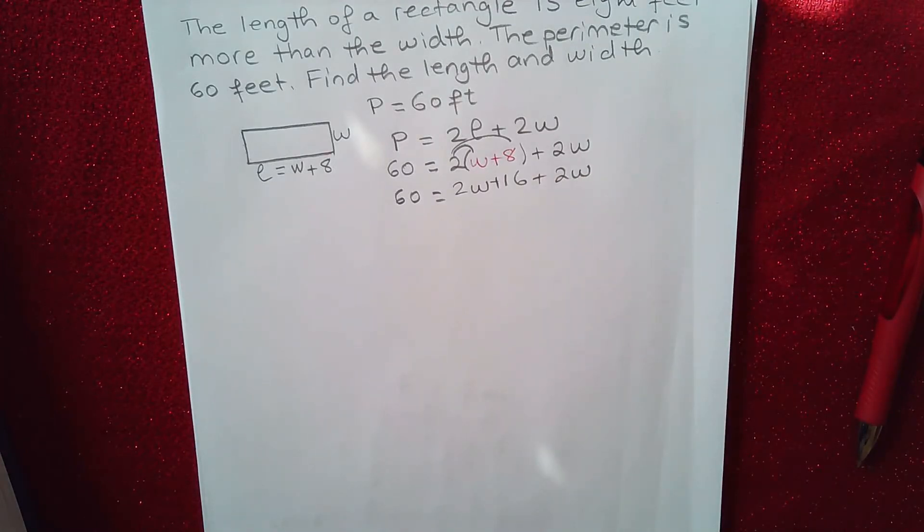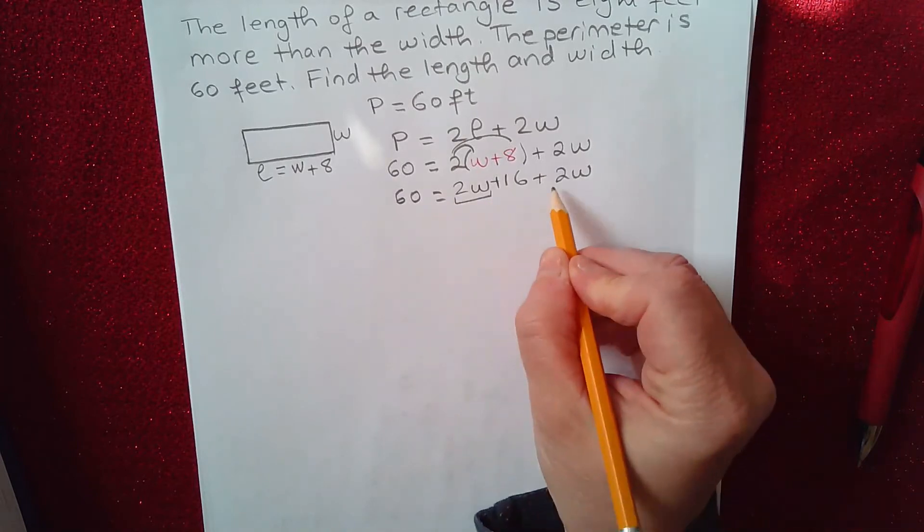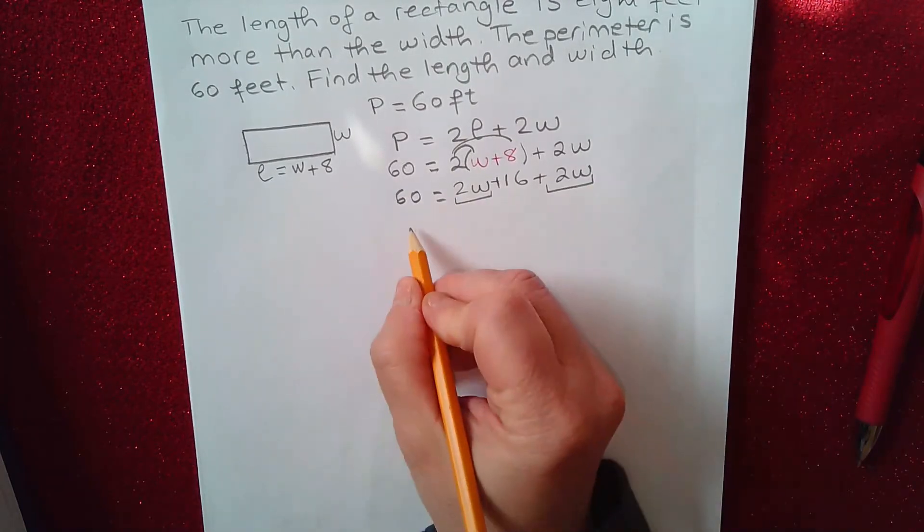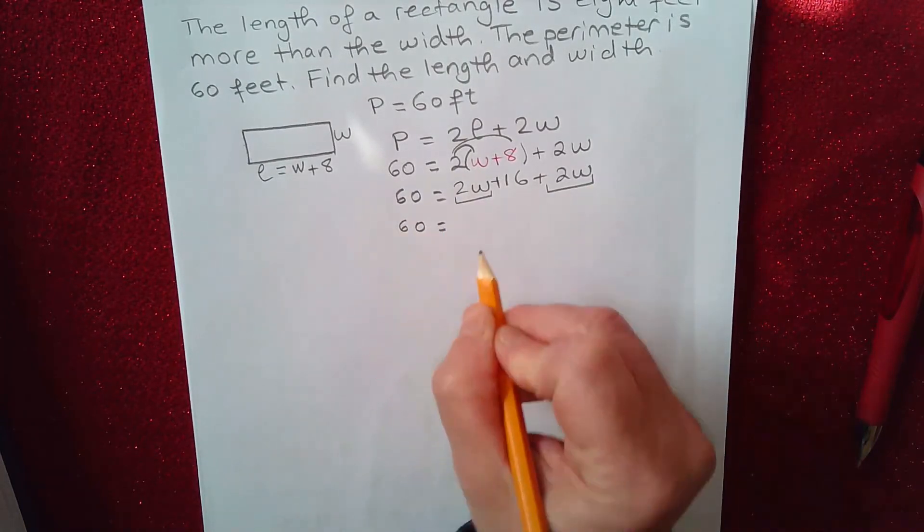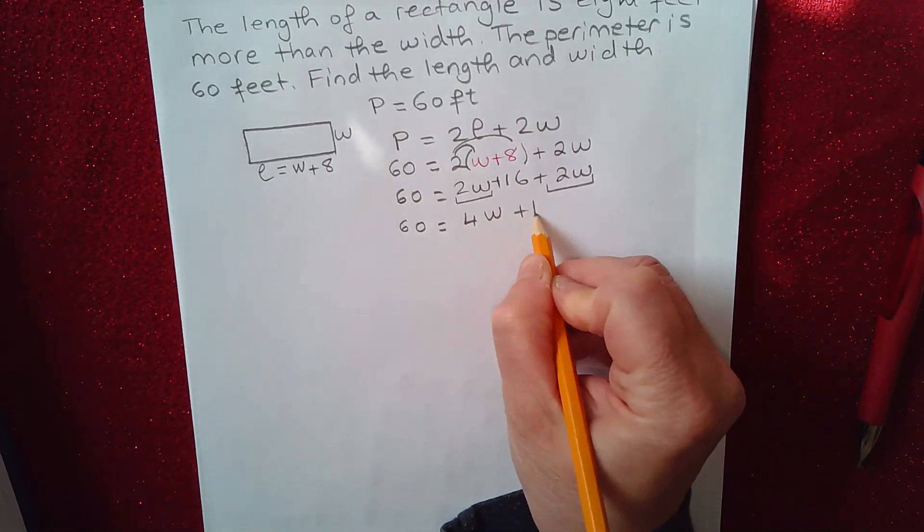Now we can combine like terms. I have 2W plus 2W. So that gives us 60 equals 4W plus 16.